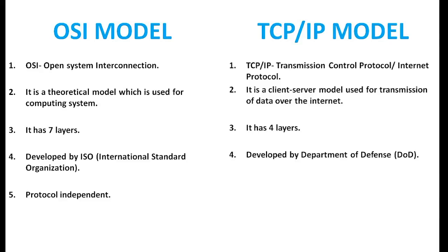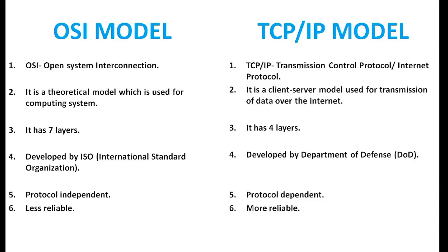OSI model is a protocol-independent standard, whereas TCP IP model is a protocol-dependent model. OSI is considered a less reliable option, whereas TCP IP model is considered a more reliable option.